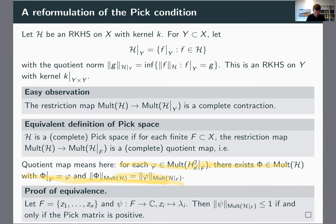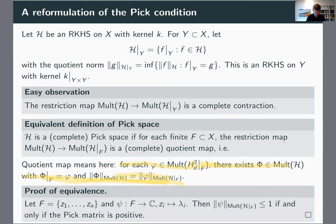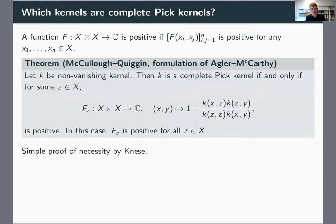Last time I explained why this is the case, so let me skip this and instead talk about the question of which kernels are complete PIC kernels or which spaces are complete PIC spaces — I'm using these two things interchangeably. I need a little bit of terminology: a bivariate function is positive if whenever you take endpoints in your underlying set X and form this N by N matrix, you get a positive semi-definite matrix.